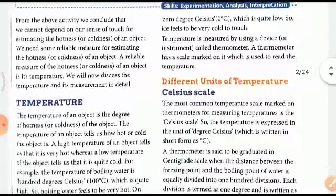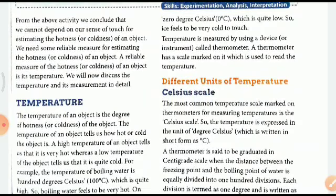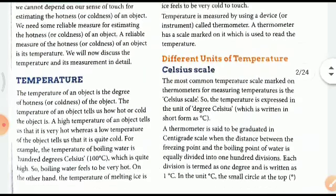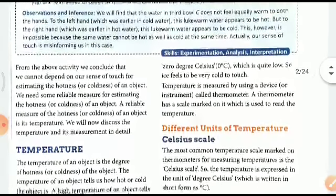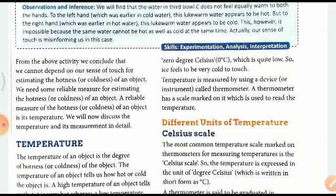We need some reliable measures for estimating the hotness and coldness of an object. A reliable measure can be the measurement of the hotness of an object, and that is its temperature. The temperature of an object is the degree of hotness or coldness in an object. A high temperature tells us it is very hot; low temperature tells us it is quite cold. For example, boiling water is 100 degrees Celsius, which is quite high. For melting ice it is 0 degrees Celsius, which is quite low, hence it is very cold.